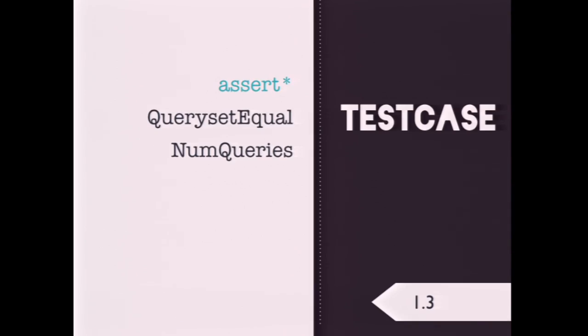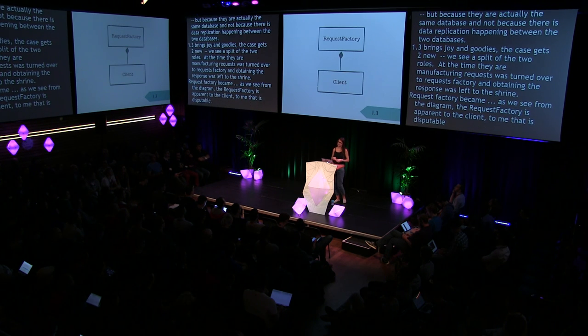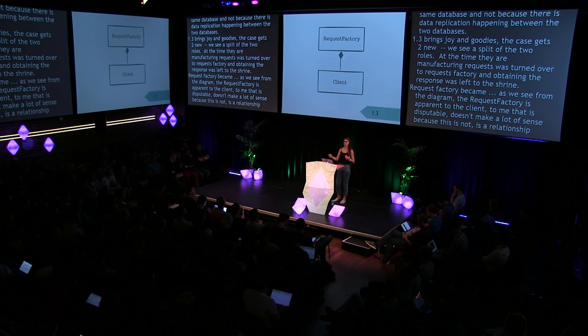1.3 brings joy and goodies. The TestCase and TransactionTestCase get two new assets. We see a split of the two roles that the test client embodied. The role of manufacturing requests was turned over to RequestFactory, and obtaining the response was left to the Client. RequestFactory became part of the public documented API. The RequestFactory is a parent class to the Client — though to me, this doesn't make a lot of sense because it's not an 'is-a' relationship. They are two separate conceptual entities, and it ties the Client to one specific way of creating requests. We could do better using composition.